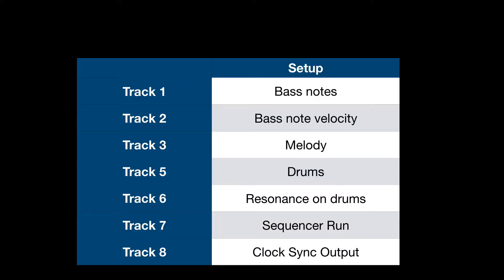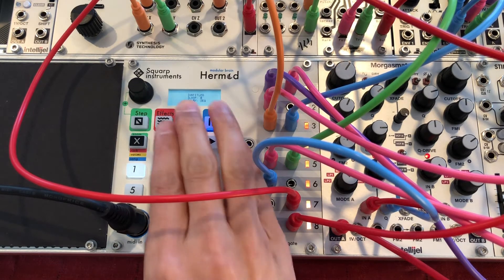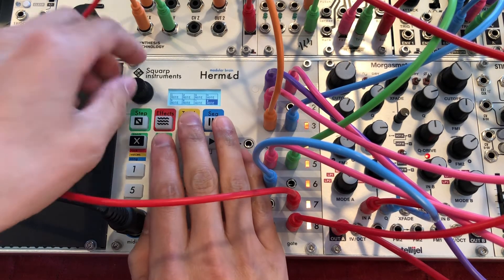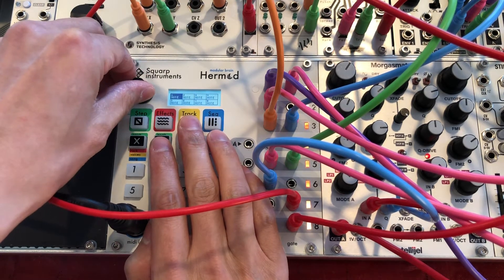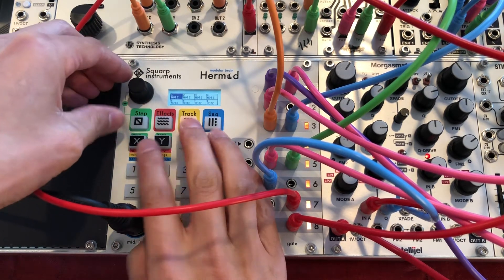So what I'm going to do is set up each of the voices one at a time so you can hear the results in progress. To do the setup, I'll first enter Hair Mod's track mode and then use the encoder to select the track that I want to configure — in this case, track 1.